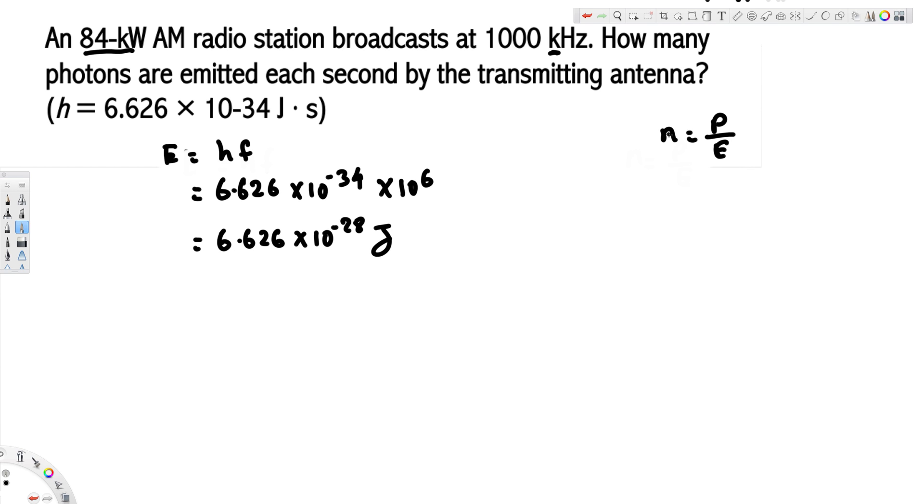Now we can go ahead and find out the number of photons per second. That's going to be equivalent to 84 kilowatts - 84 kilo is 10 to the power of 3, and watts equals joules per second. I put it like that because we can see the units cancel each other, and this energy is 6.626 times 10 to the power of minus 28 joules.